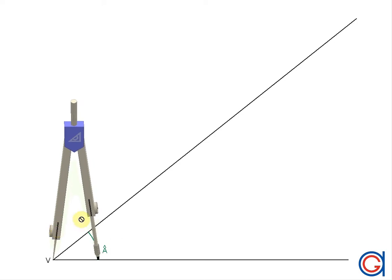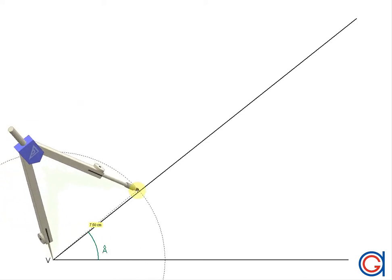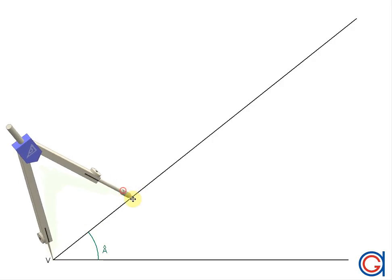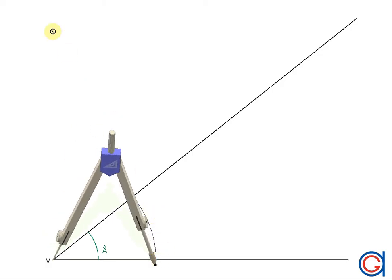First we set our compass to whatever radius we like and setting our compass on point V, we scribe an arc until it cuts both lines at two points, which we will call B and C as shown here.